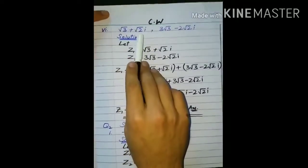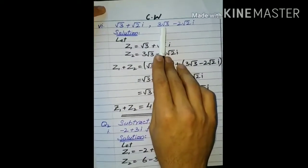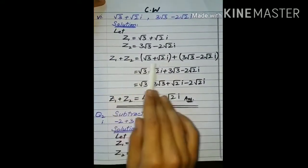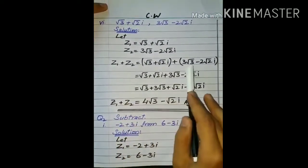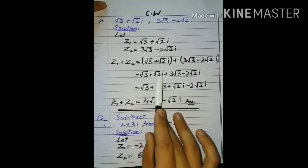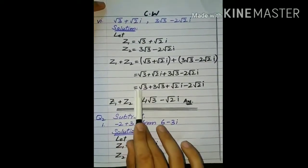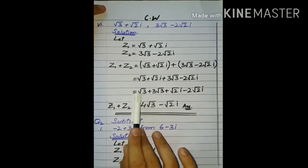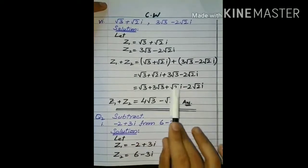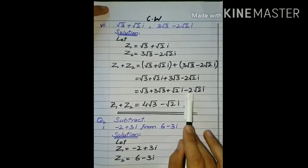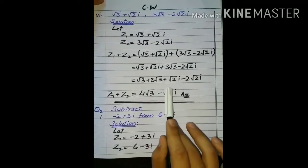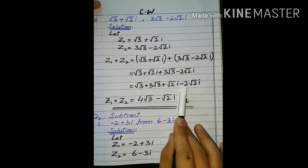چوتھا part ہمارے پاس ہے: under root 3 plus under root 2 iota اور دوسرا نمبر 3 under root 3 minus 2 under root 2 iota۔ ان کو Z1 اور Z2 نام دیے ہیں اور add کرنا ہے۔ Z1 plus Z2 میں Z1 کی value لکھی پھر plus پھر Z2 کی value۔ parenthesis ہٹائے، real کو real کے ساتھ اور imaginary کو imaginary کے ساتھ۔ square root والے numbers کو add کرتے ہیں — 3 اور 1 کو add کریں تو 4 under root 3 آ جائے۔ imaginary part میں 1 اور minus 2 کا operation: minus سے 1 چلا جائے گا تو sign of greater term minus کے ساتھ under root 2 iota آجائے گا۔